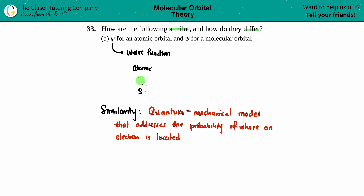An atomic orbital is basically the setup before your molecular orbital. Your molecular orbital is now describing what's going on when two atomic orbitals try to come together. If your s orbitals are trying to come together, you could have either a bonding molecular orbital or an anti-bonding molecular orbital.